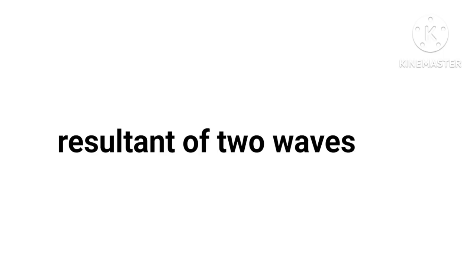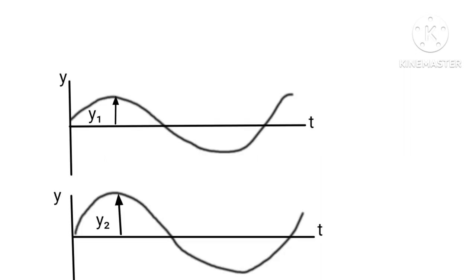We shall now mathematically derive a formula to find the resultant wave. Let us have two waves traveling alone, and the displacements of any element of these two waves can be represented by Y₁(X,T) and Y₂(X,T). When these two waves overlap, the resultant displacement can be given as Y(X,T).